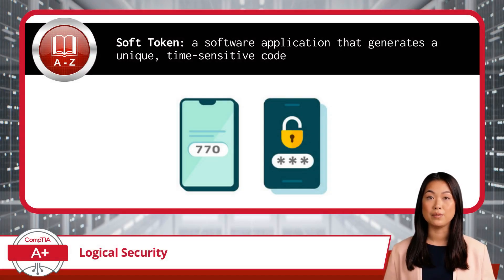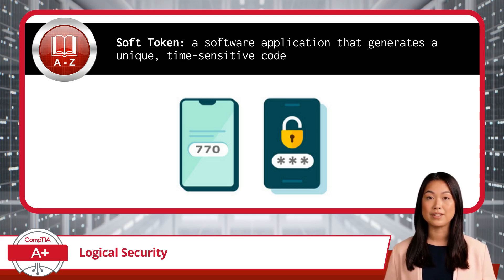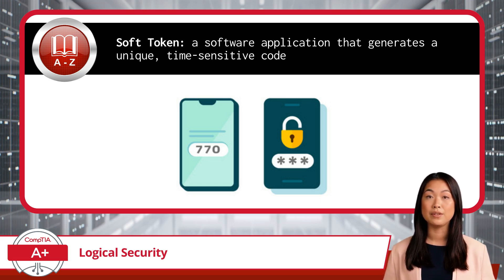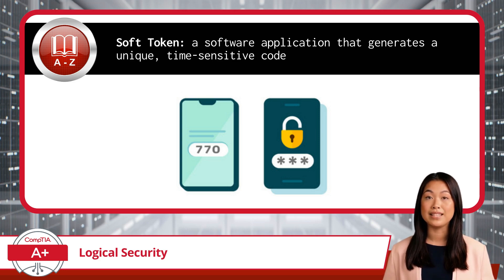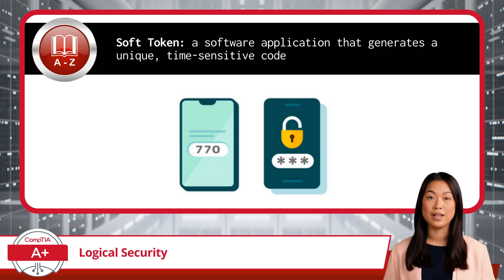A soft token is a software-based version of a hard token that provides the same functionality but without the need for a physical device. Soft tokens are typically implemented as an authenticator application on a smartphone or other mobile device. These authenticator applications generate a time-sensitive code for MFA. Because they are software-based, soft tokens are convenient and inexpensive, allowing organizations to implement strong authentication measures with minimal cost.